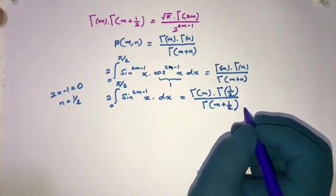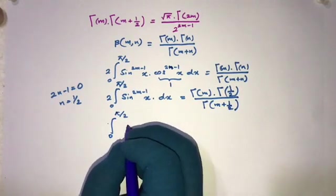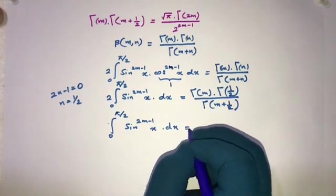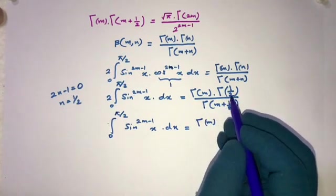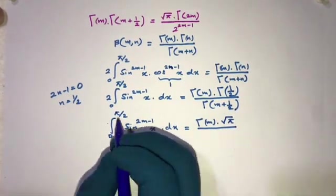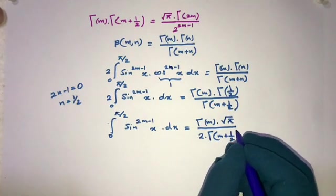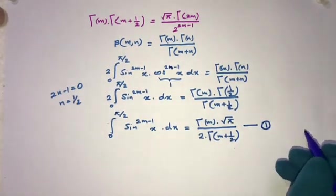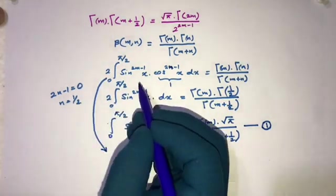We plug in n equals one-half. So we get gamma of m times gamma of one-half over gamma of m plus one-half. The integral from 0 to pi over 2 of sine to the power 2m minus 1 of x dx equals gamma of m times gamma of one-half, which is square root of pi, over 2 times gamma of m plus one-half. I will call this Equation 1.